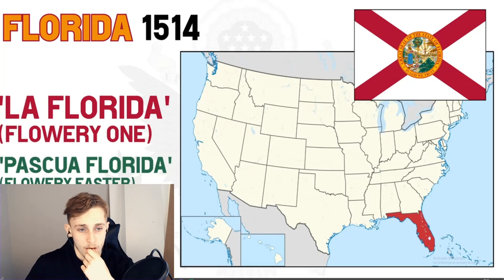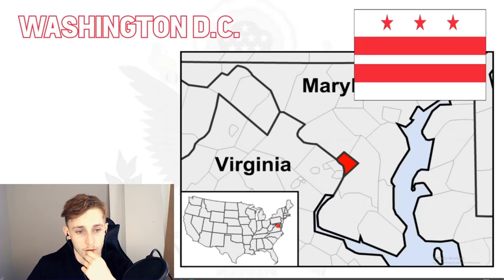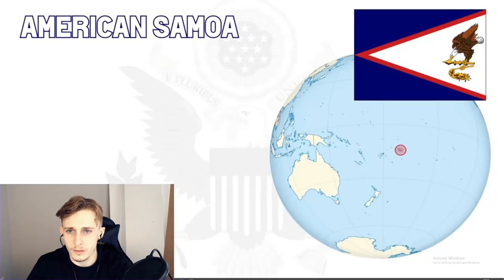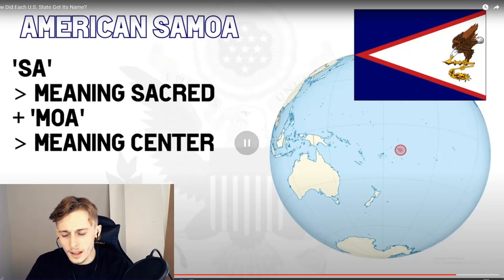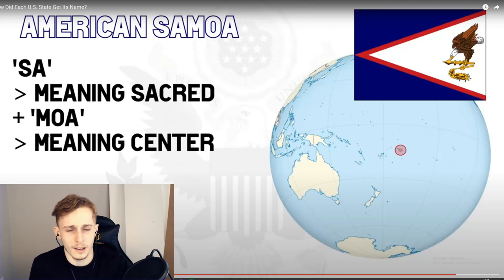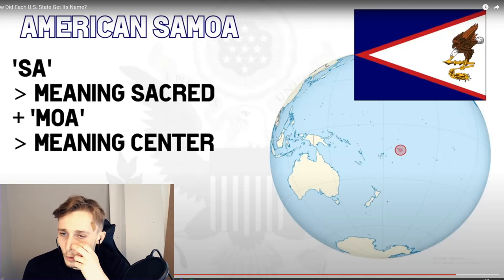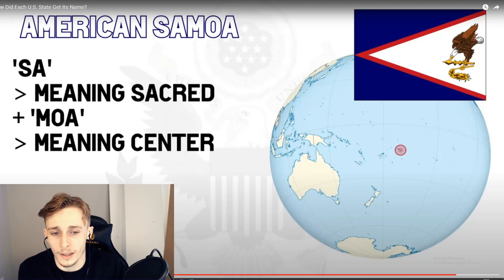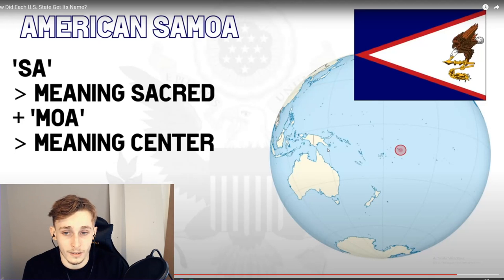The US also has territories and a federal district. Washington DC, or the District of Columbia, gets its name from Christopher Columbus, the famous European navigator. I wonder how Americans view Columbus today — I assume he's seen as a bad guy, though I'm not entirely sure. American Samoa is composed of two parts: 'sa' meaning 'sacred' and 'moa' meaning 'center,' so the name can mean 'holy center' or 'place of the sacred moa bird of Polynesian mythology.'